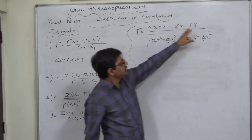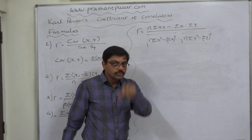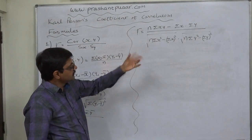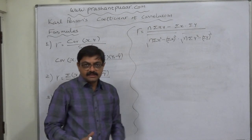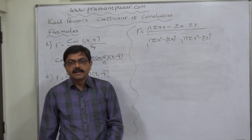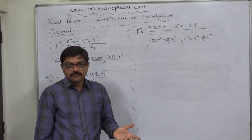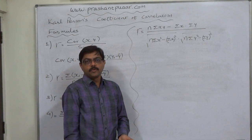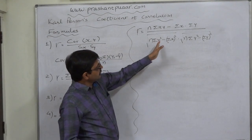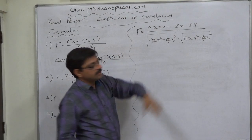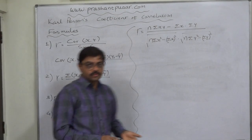The five summations needed are: sigma x, sigma y, sigma x-squared, sigma y-squared, and sigma xy. Sigma x and sigma y are the summations of the two variables, which are directly available from the problem. For the remaining three — sigma x-squared, sigma y-squared, and sigma xy — we just have to prepare three new columns only.